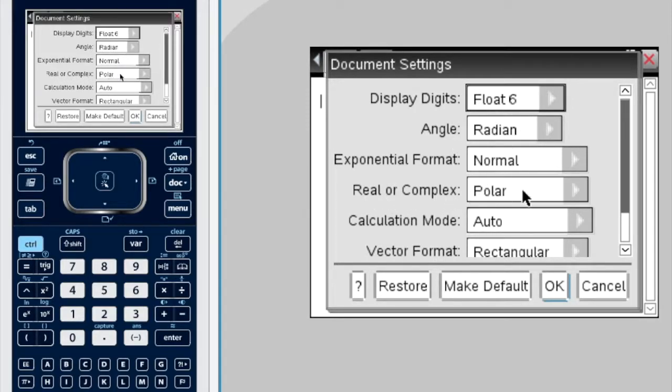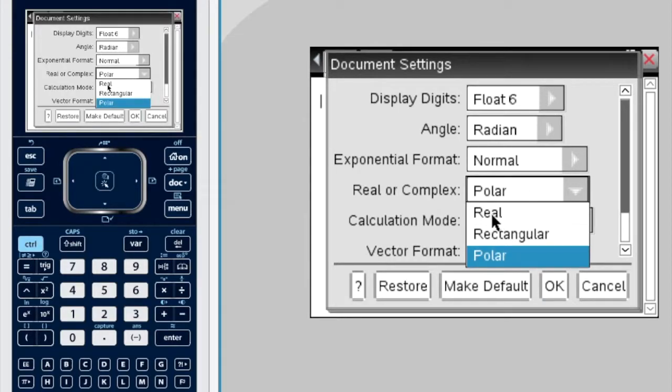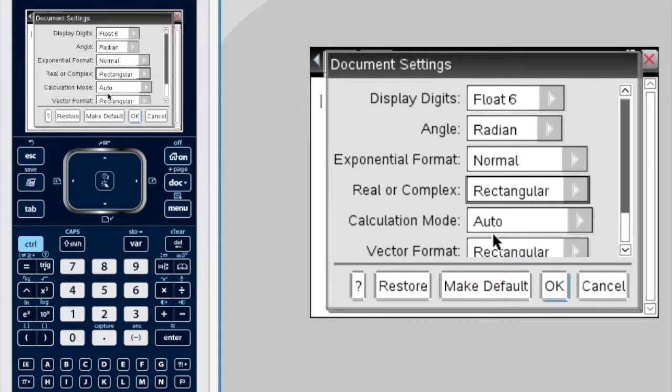Now, real or complex, if I click on this, I obviously don't want real. Now, I can choose either rectangular or polar, depending on how I want my answers to look. I'm going to go with rectangular, I think that's going to be our most popular choice generally. Okay, press okay.